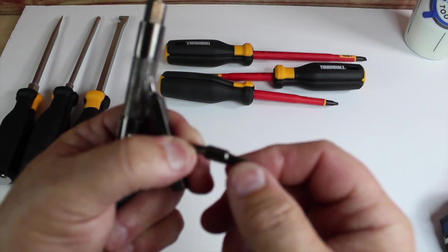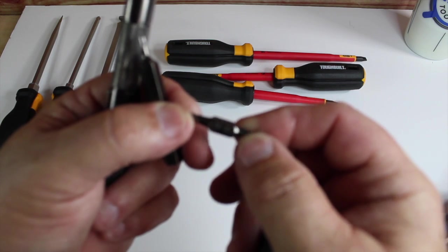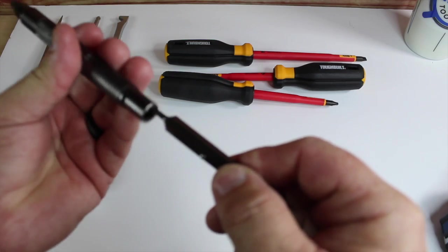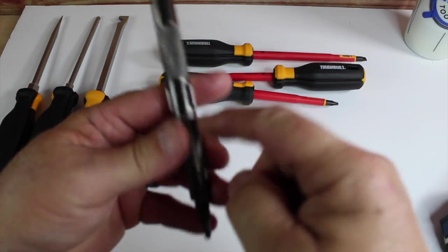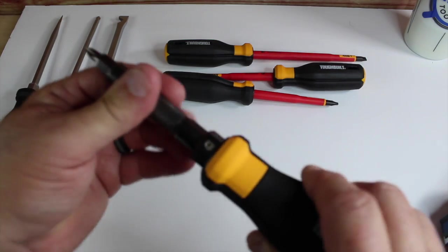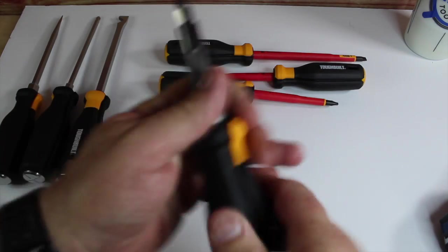And then here you have the square—square one and square two on that side. So that's pretty neat. And again, it's got the knurling on both sides, so no matter which side you have inside the handle, it's all covered that way.